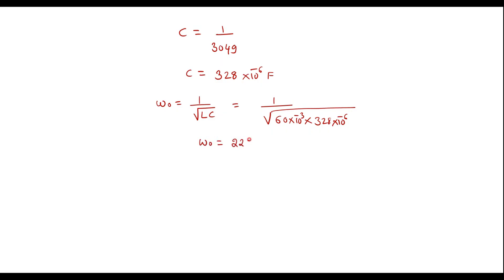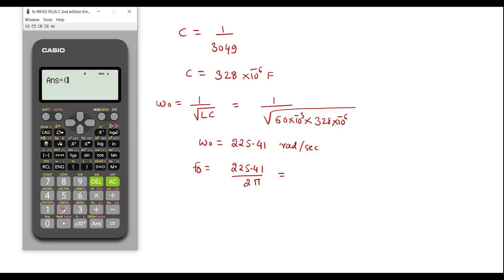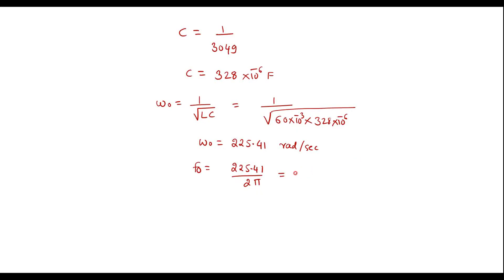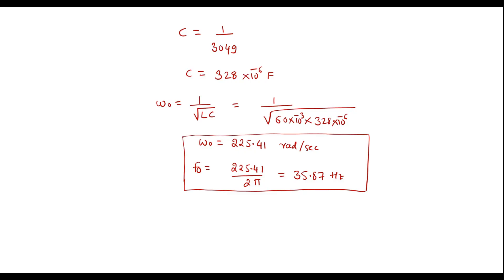So ω₀ is equal to 225.41 radians per second. In terms of frequency, since ω₀ = 2πf₀, we get f₀ = 225.41 / 2π, which gives 35.87 Hz. So the required resonant frequency ω₀ is 225.41 radians per second and f₀ is 35.87 Hz. Thank you for watching.